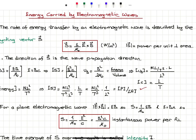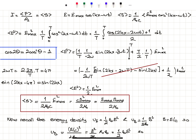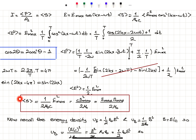Substituting that in, the average value of E squared is E_max squared over 2, giving intensity as E_max squared over 2 mu zero C. Since E equals BC, this can also be written as B_max squared C over 2 mu zero, or E_max B_max over 2 mu zero. These all describe the same quantity: average power per unit perpendicular area, which is intensity — the average value of the Poynting vector magnitude.